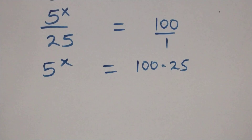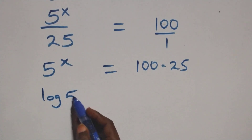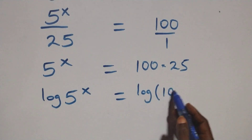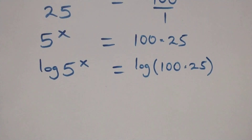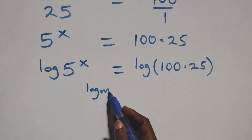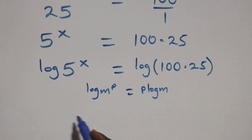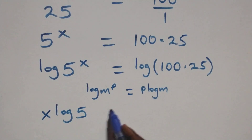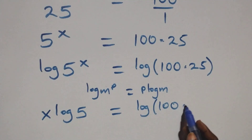From here we take the log on both sides. We have log of 5 raised to power x equals log of 100 times 25. We apply the power rule of logarithms: when we have log m raised to power p, this is the same thing as p log m. So we have x log 5 equals log of 100 times 25.